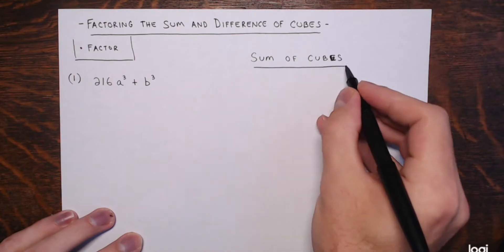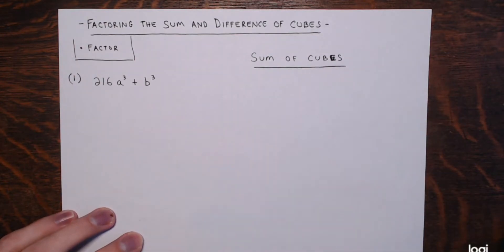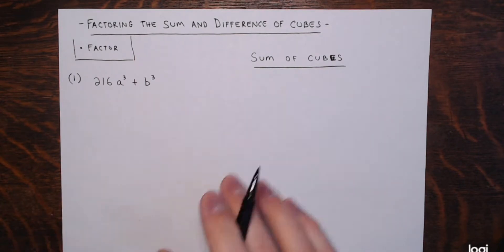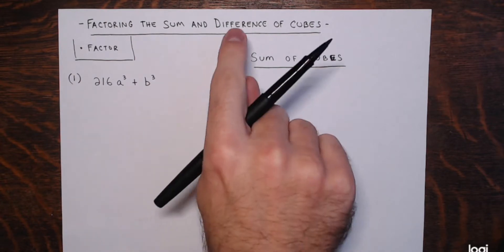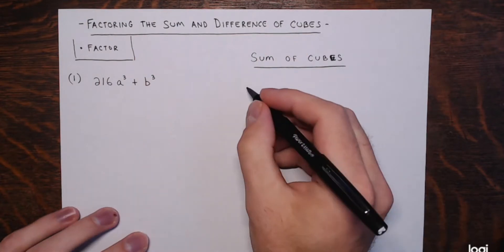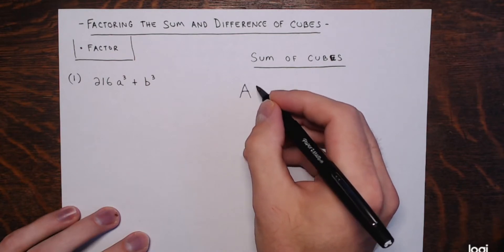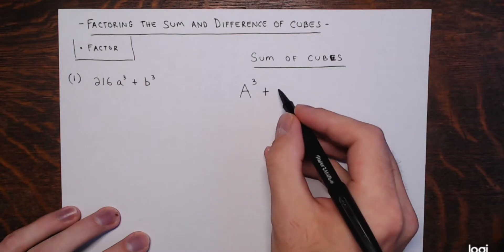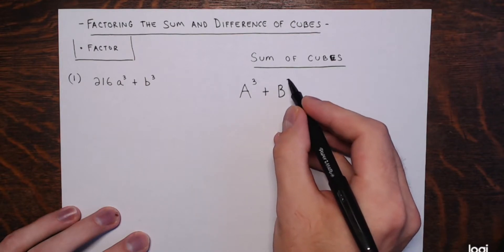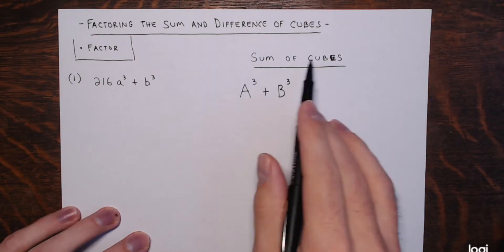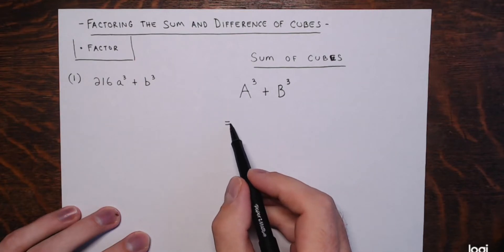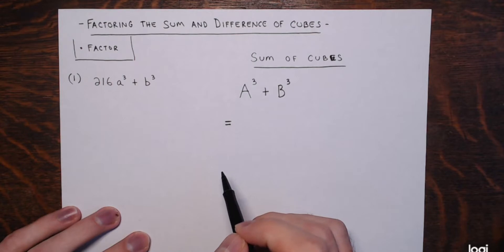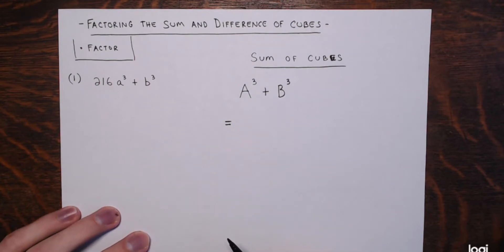The sum of cubes — it's kind of like the difference of squares or a perfect square trinomial. There's a little formula I'd recommend you memorize to help you speed up the factoring of sums of cubes. The sum of cubes takes the following form: you have some expression a to the third power — a perfect cube — plus another expression b also to the third power. So a cube plus a cube, the sum of cubes. If you recognize an expression as a sum of cubes, you should be able to easily factor it — but you should have this memorized, please.